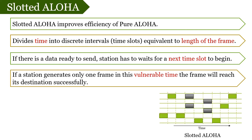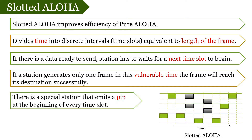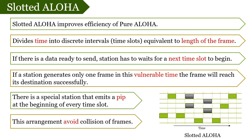Now if a station generates only one frame in this vulnerable time, the frame will reach the destination successfully without any collision. To indicate the beginning of each new time slot, a special station is appointed that emits a beep at the beginning of each new time slot. This kind of arrangement avoids collision.